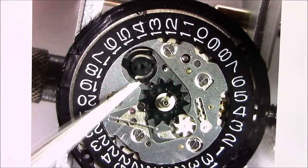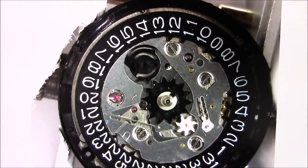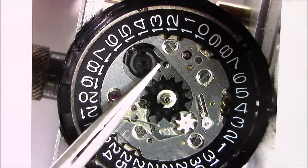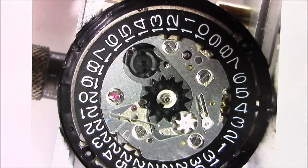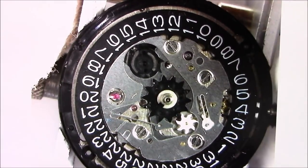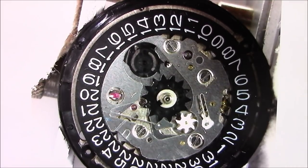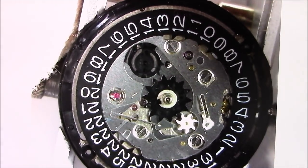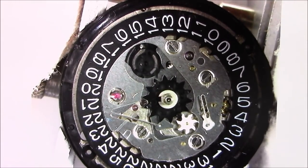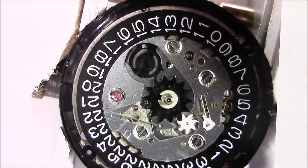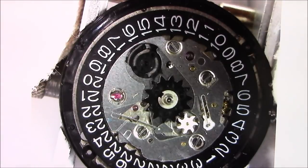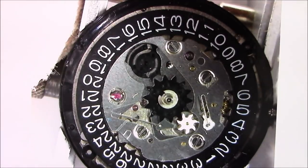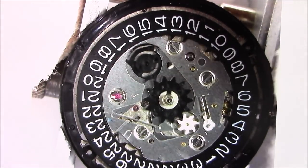So watch these two teeth here. I'm going to fast forward the video. So now watch these two teeth. One, two. And you'll see that they start to engage that center wheel that had the day of the week on it right after the date is done moving. So the date moves, snap, and then the day of the wheel, the day of the week wheel snaps once and snaps twice.